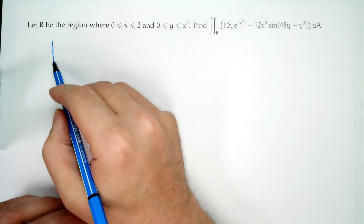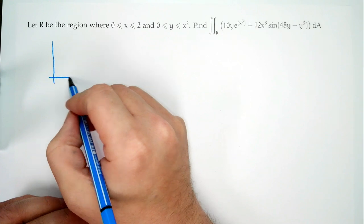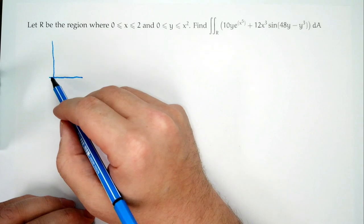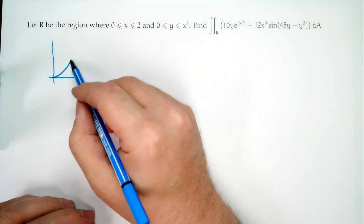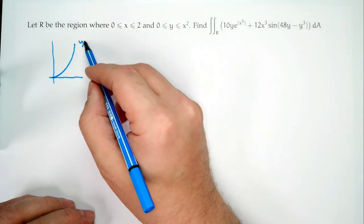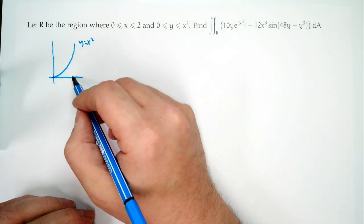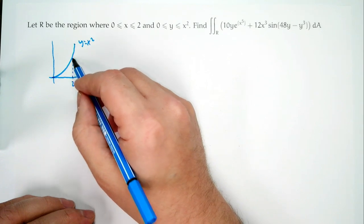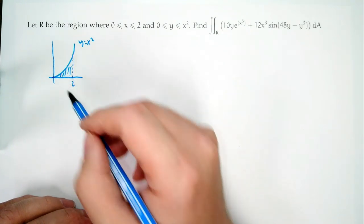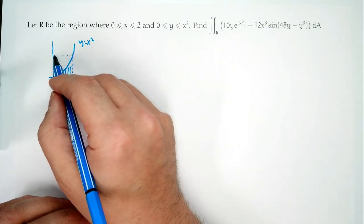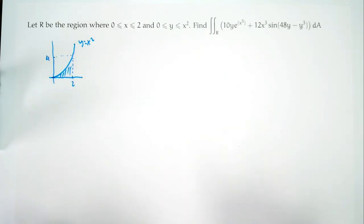To help figure out what we should do, let's get a quick sketch. We're told y goes between 0 and x², so we sketch y = x². x is going from 0 out to 2, and at x = 2, y = 4. Not quite to scale, but we just need to get an intuition going.